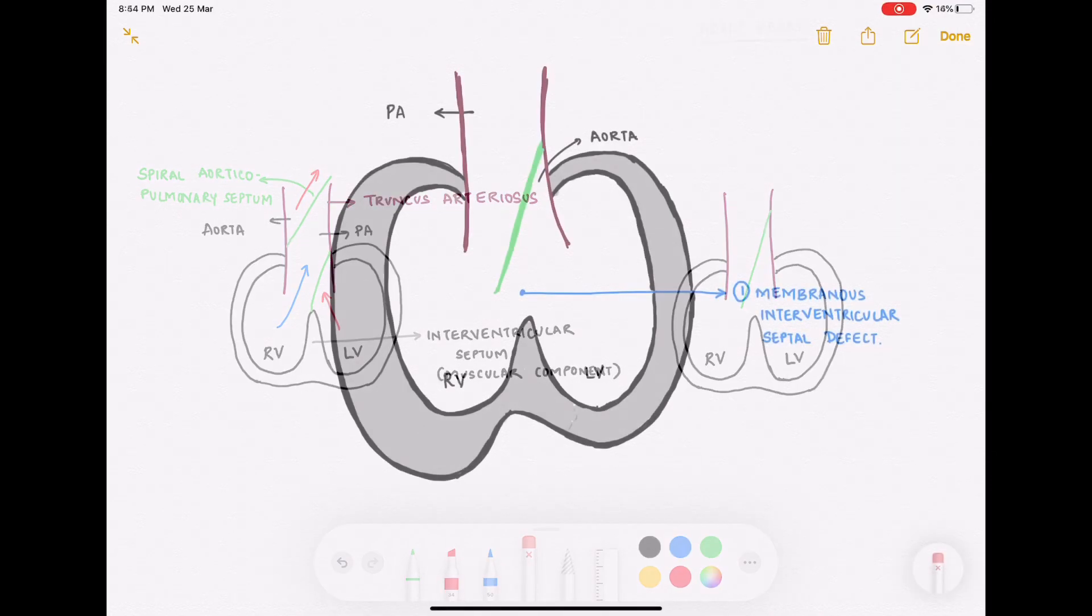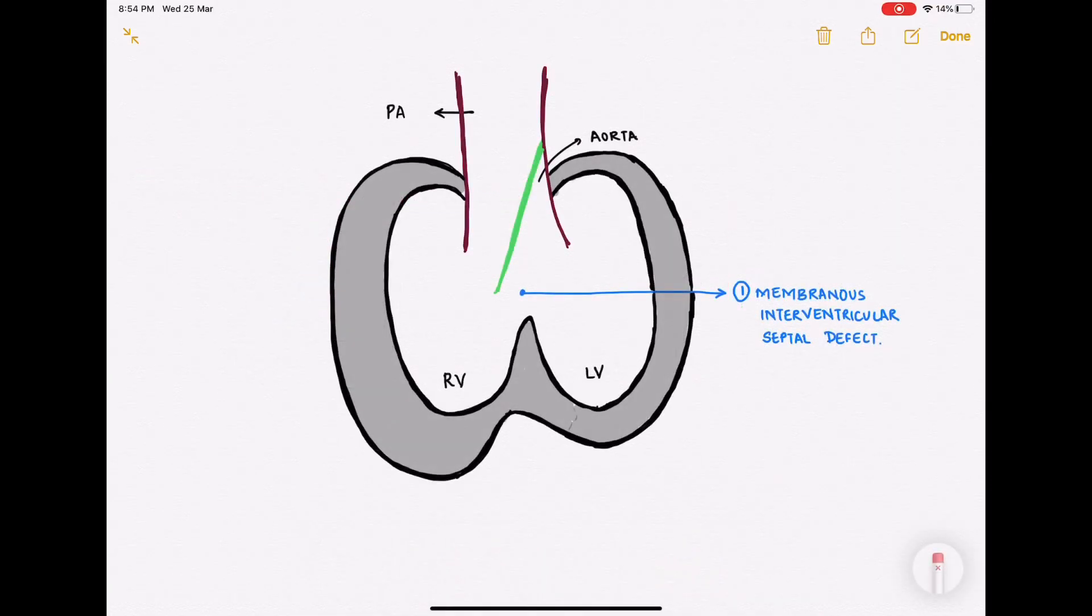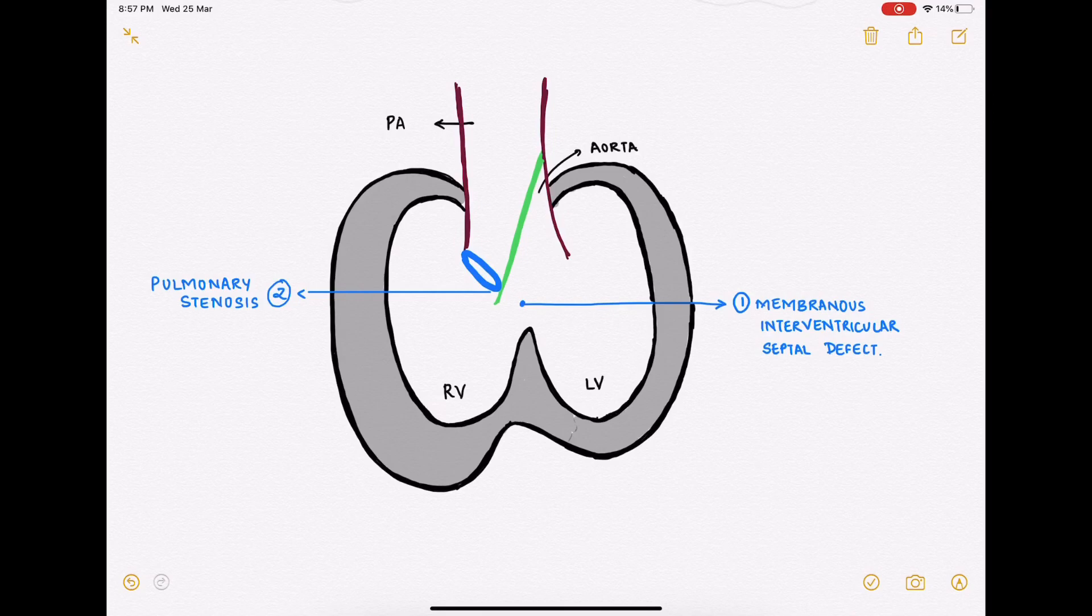The first and the most obvious defect that you can see here is that the interventricular septum is not complete - that is, there is membranous interventricular defect. The second pathology that you can see here is that the opening to the pulmonary artery has narrowed down, so that is pulmonary stenosis, which is the most important pathology in the tetralogy.